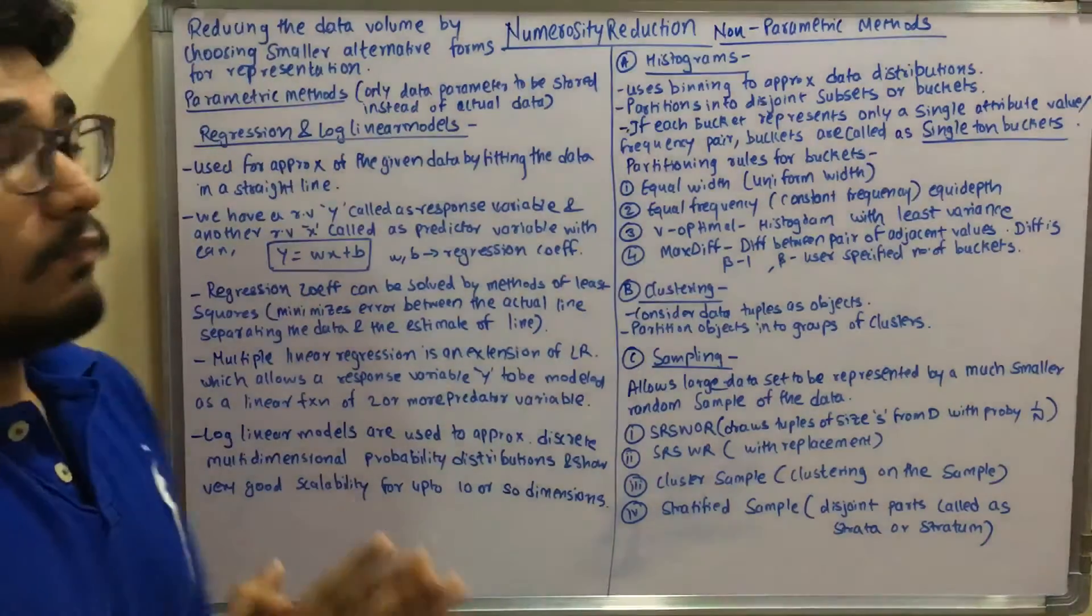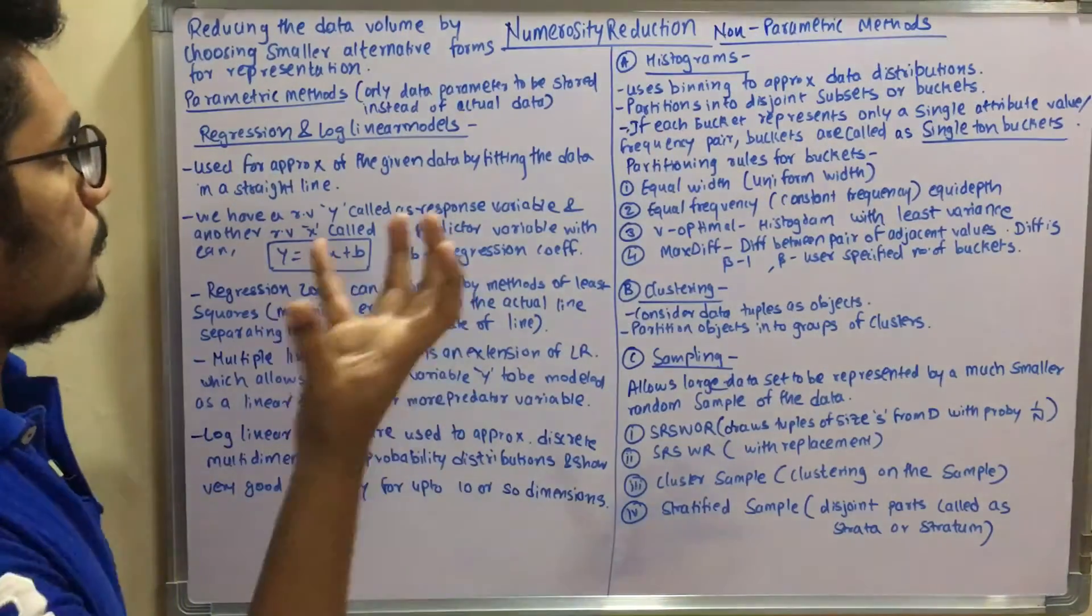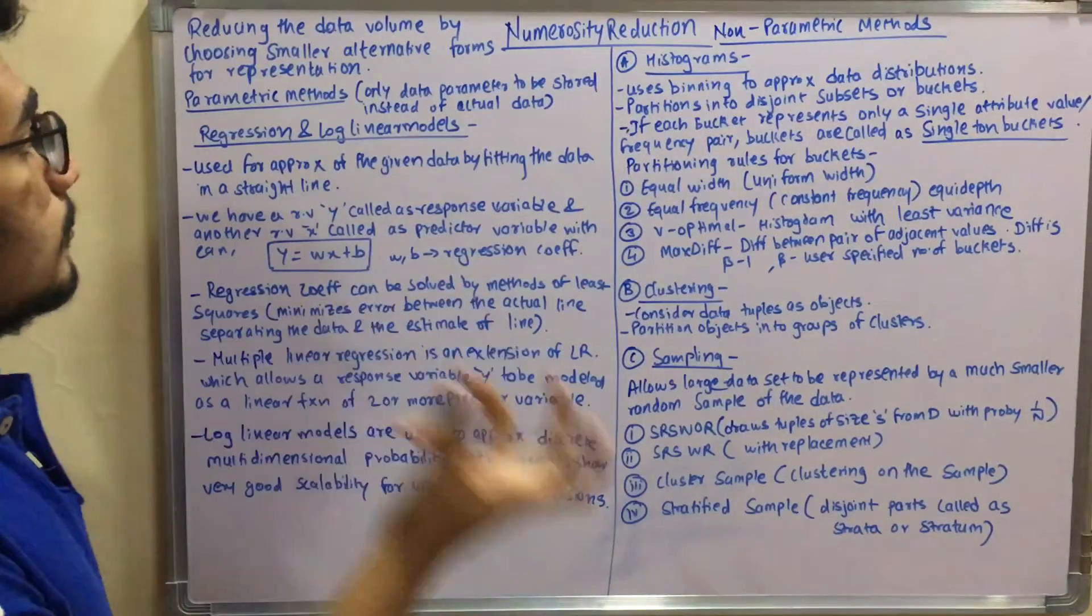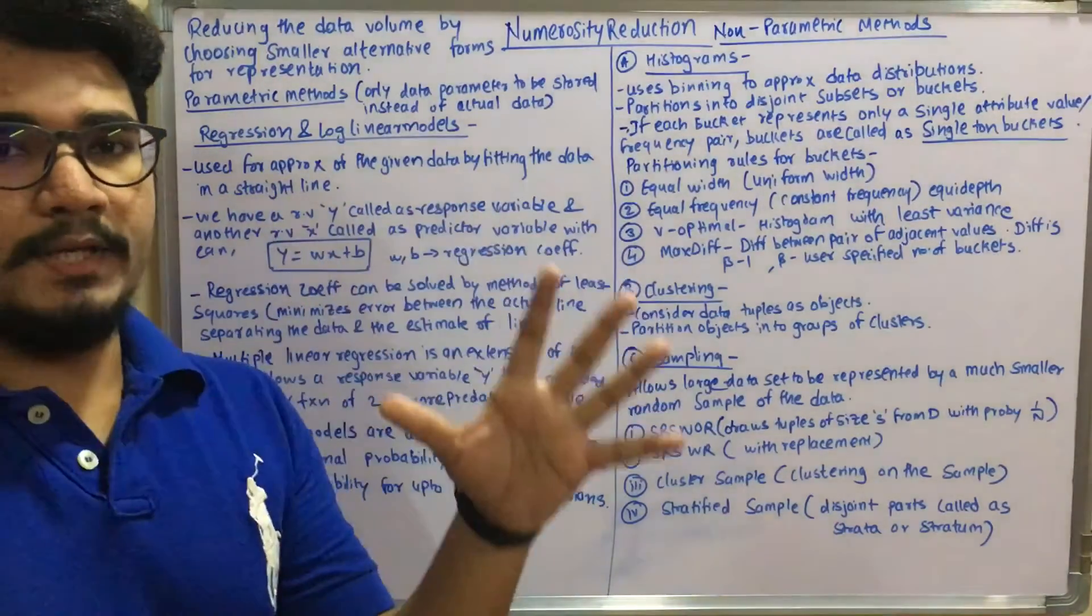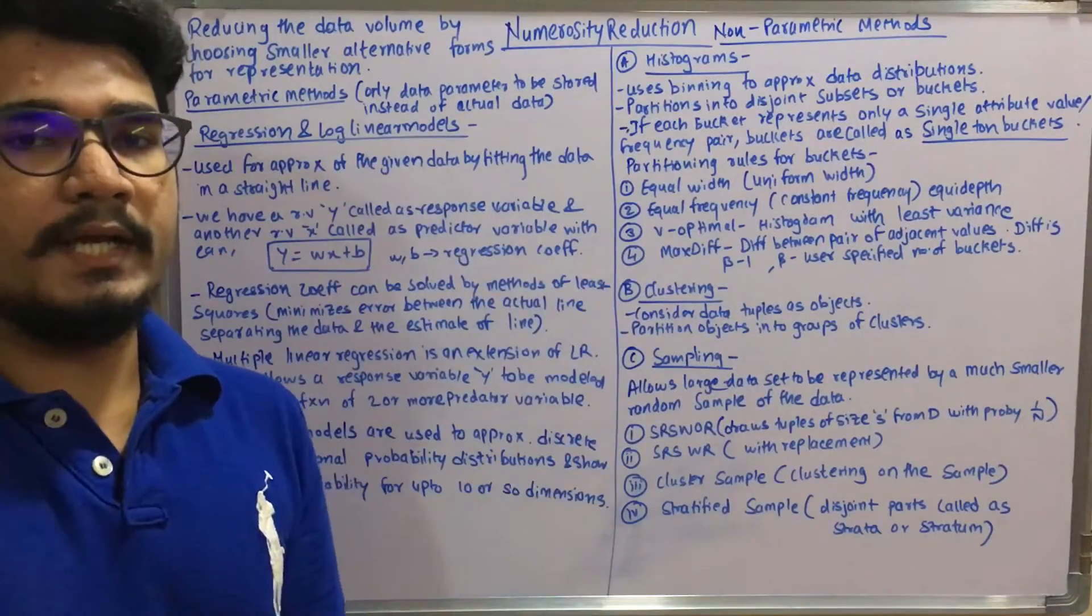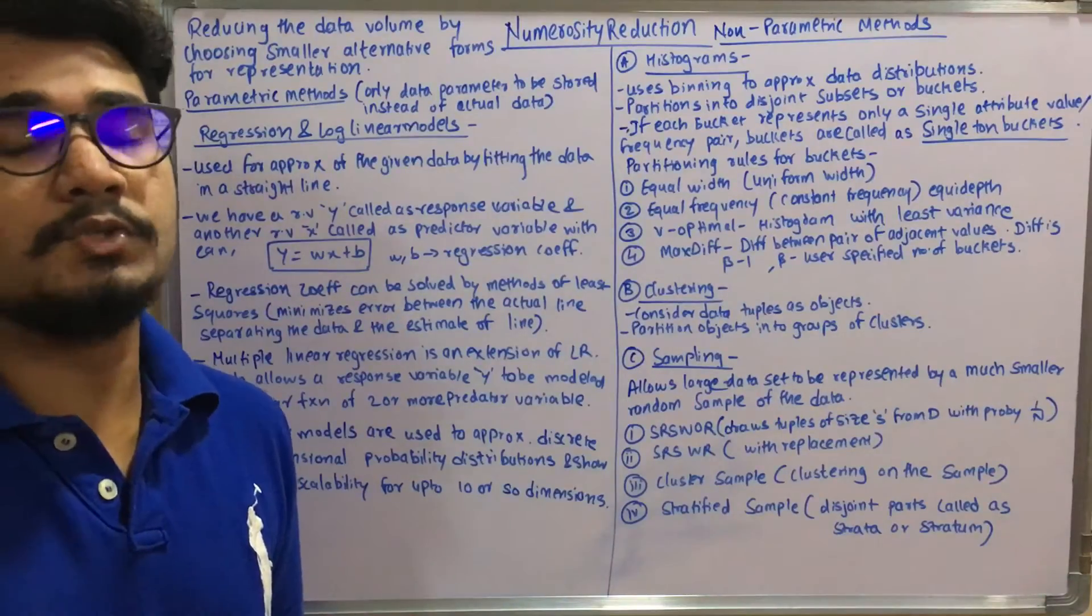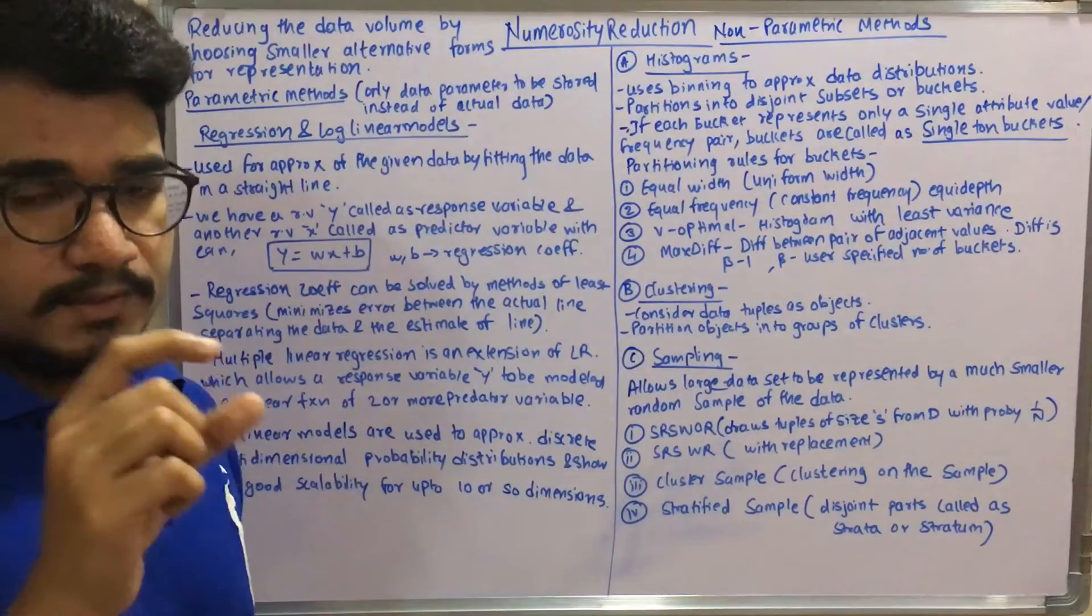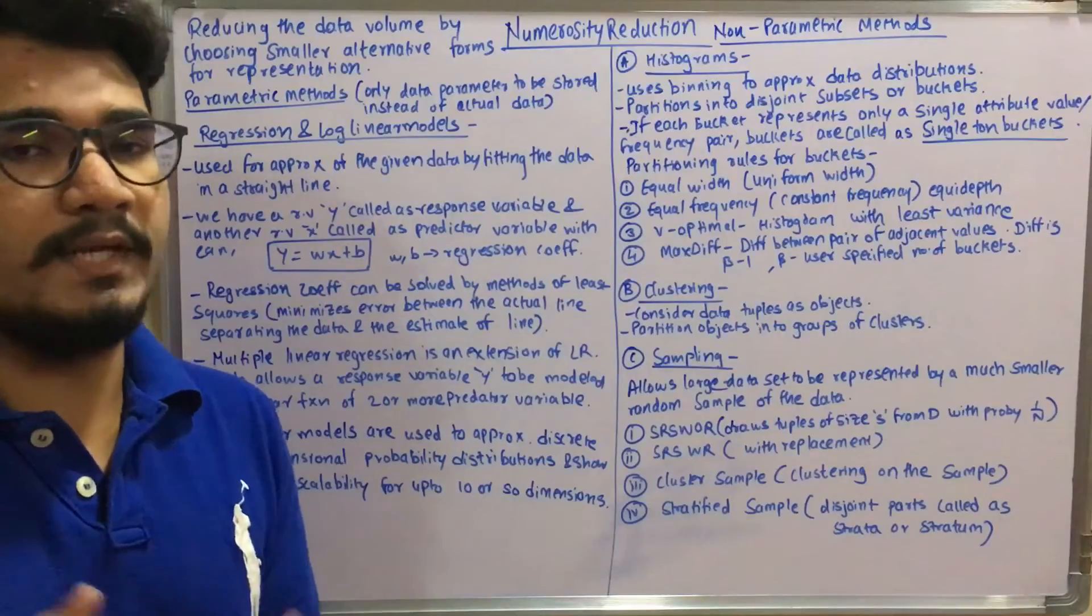So first of all, what is numerosity reduction? Numerosity reduction is reducing the data volume which you have originally by choosing smaller alter forms for representations. Like you have a big kind of data, you integrate and then you differentiate. So that differentiation product or value which you obtain, that's the smaller form. So in numerosity reduction, you represent in that way the original data so that you can feed it to the other input system very easily.